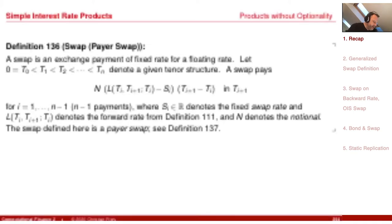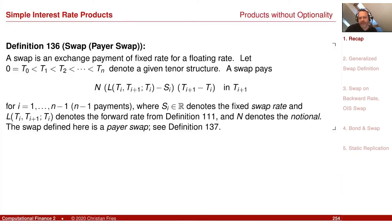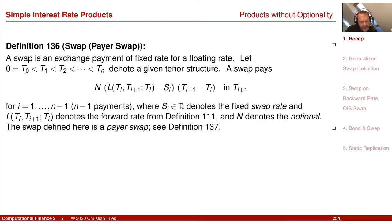We ended by defining the swap, which is an exchange of two payments: receive the floating rate, pay the fixed rate. So it's L minus S, where S is some fixed rate. Since we can value all fixed payments by multiplying with the zero coupon bond, and we can now value floating rate payments, we could value the swap.